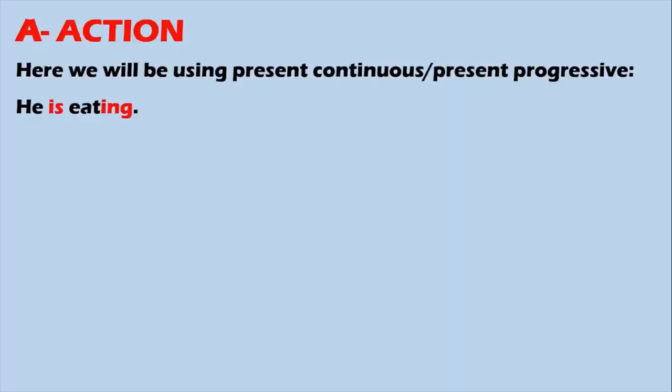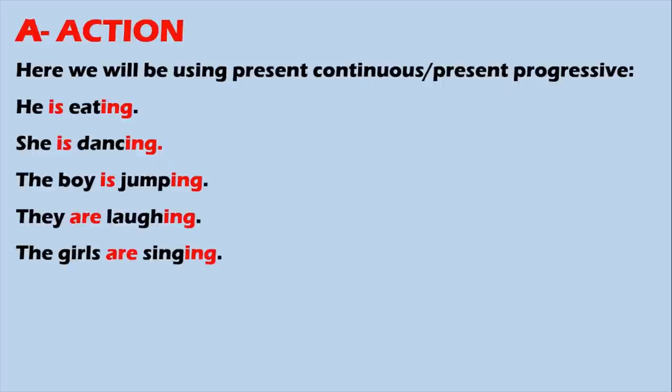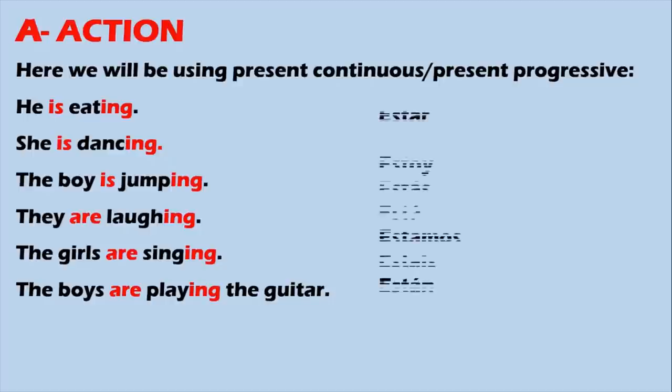On the second part of PALMA, we'll talk about action. This might be the trickiest bit in the entire picture description because we will need to learn something called Present Continuous or Present Progressive. In English, this would be something like: he is eating, she is dancing, the boy is jumping, they are laughing, the girls are singing, or the boys are playing the guitar. All of these are examples of the verb in Present Continuous.